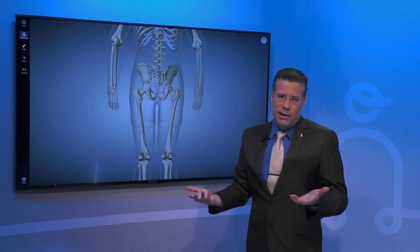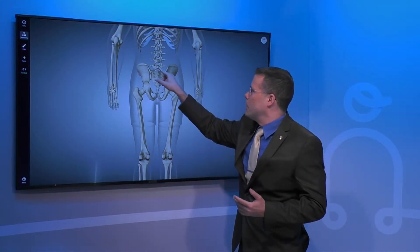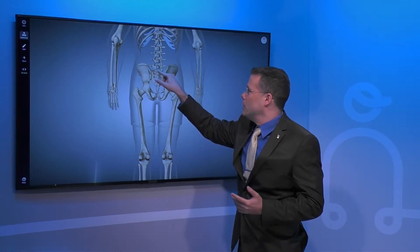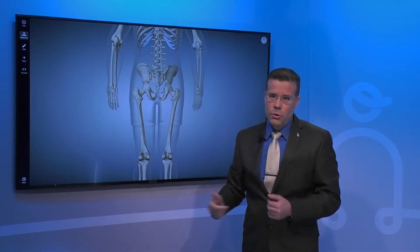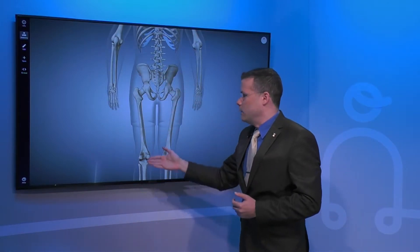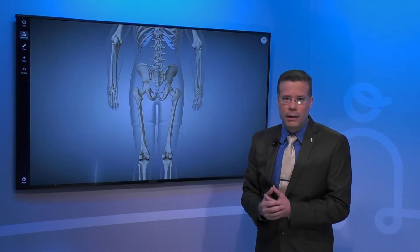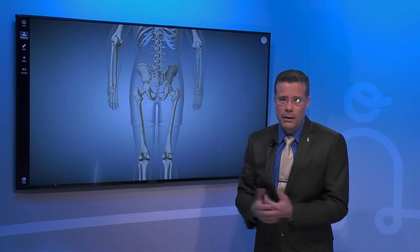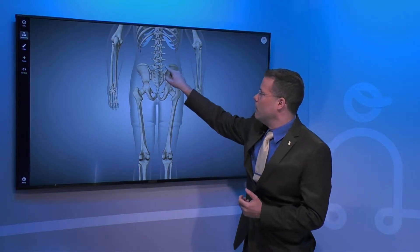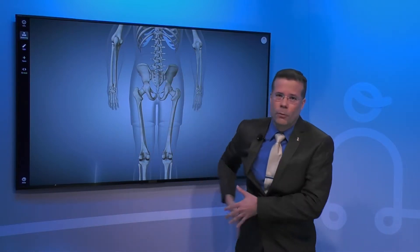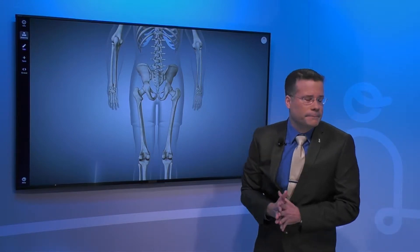Essentially what sciatica means is that there's a compression of a nerve in your lower back, and you might be feeling it down in the buttock or in the leg. So that's basically what sciatica entails — it's normally a problem up here that people will feel down in the leg.